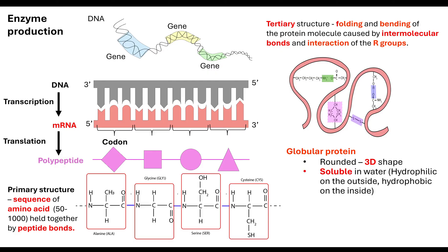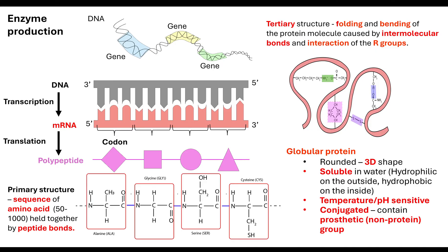Enzymes are globular proteins — they are rounded 3D shapes. They are soluble in water because the hydrophilic amino acids orientate themselves on the outside and the hydrophobic amino acids orientate on the inside. These globular proteins are temperature-sensitive because if it gets too hot they will denature, and they're also pH-sensitive because hydrogen ions will affect that tertiary structure. Some of them are conjugated, where they actually contain a prosthetic group — a non-protein group.